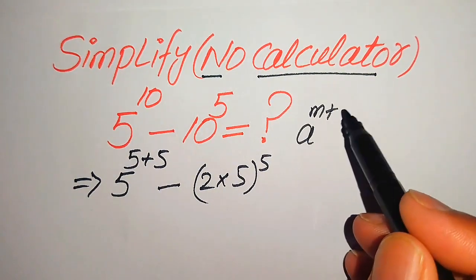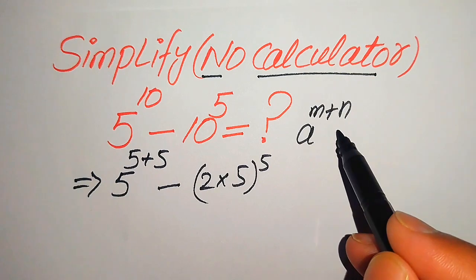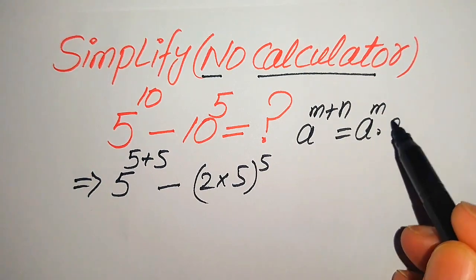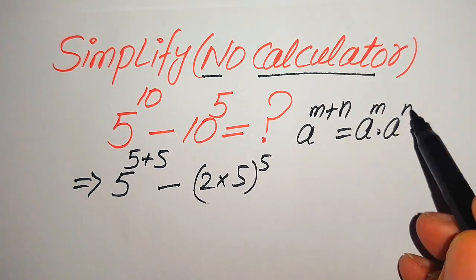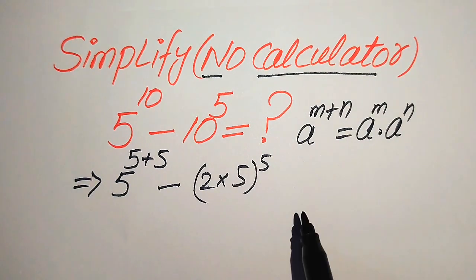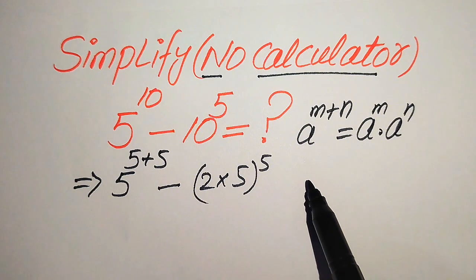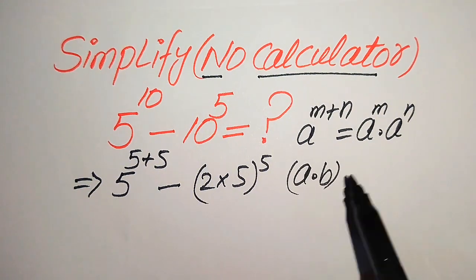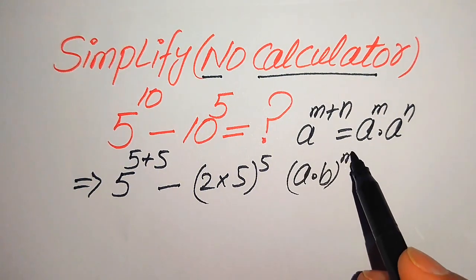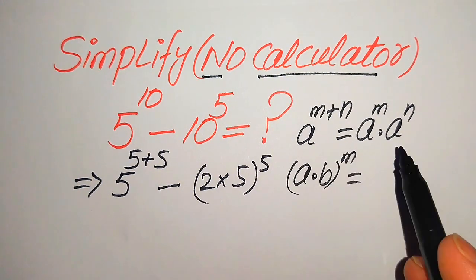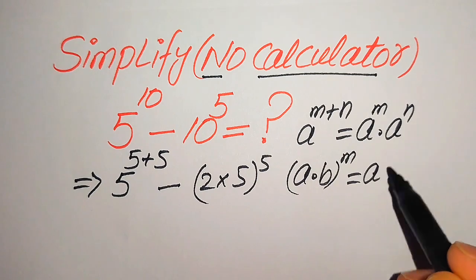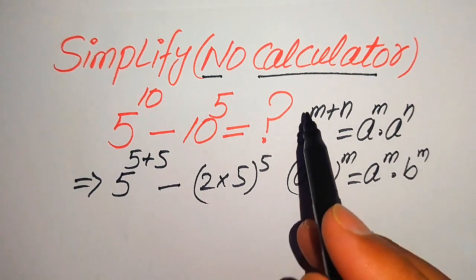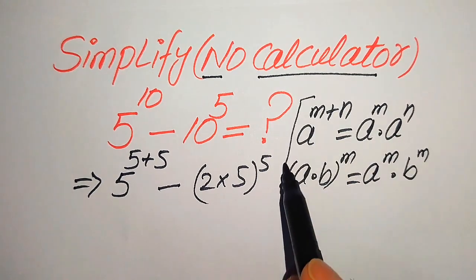The first law is: a to the power of m plus n equals a to the power of m multiplied by a to the power of n. The second law is: (ab) to the power of m equals a to the power of m multiplied by b to the power of m.